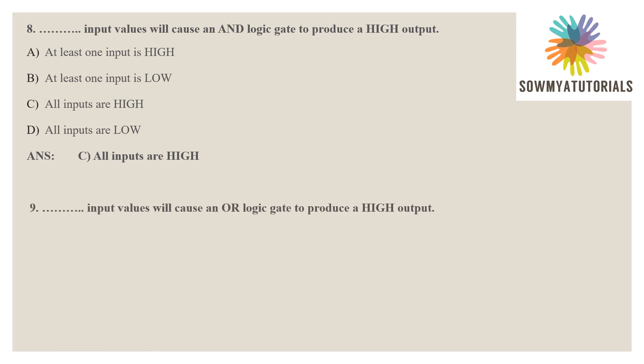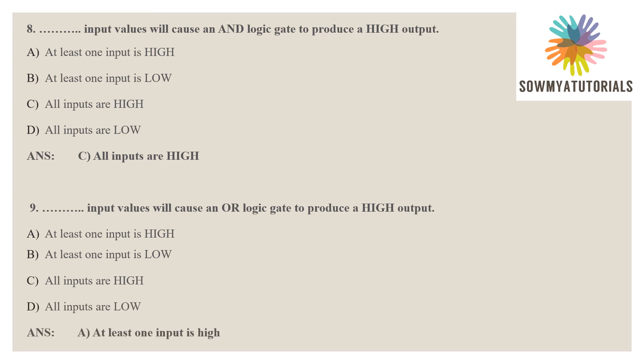Question 9: which input values will cause the OR logic gate to produce a high output? In the OR logic gate truth table, when both operands are 0, the result is 0; otherwise all results are true — meaning any one result being high means any one input is high and the result is high; when both operands are low, the result is low. Option A: at least one input is high — this is correct. Option B: at least one input is low — wrong. Option C: all inputs are high — wrong. Option D: all inputs are low — also wrong. The correct option is: at least one input is high, the result is high.